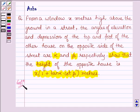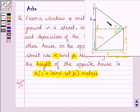Let's start with the solution. And in this figure, let CD be a window and AB be the house which is on the opposite side of the window.